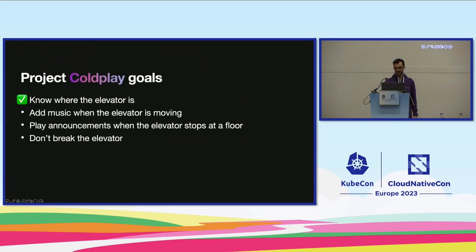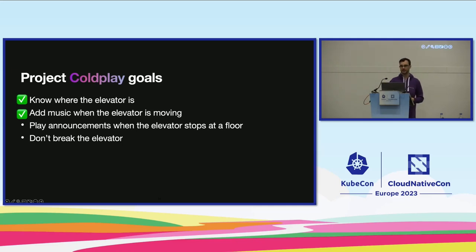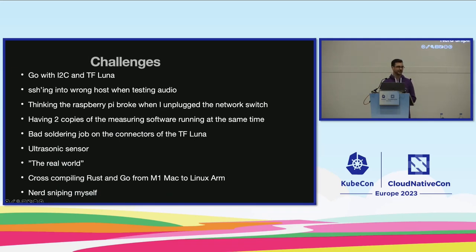So I now have two out of four — maybe three out of four goals met because I still haven't broken the elevator. There was only one more thing to add: announcements. That turned out not to be that complicated because I had all the logic in place — I know when the elevator is moving, when it stops, and at what floor it is. The biggest challenge was using Go with I2C and the TF-Luna; I still don't know what went wrong there, maybe race conditions. Also SSH-ing into the wrong host when testing audio was a big issue.